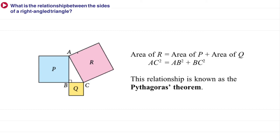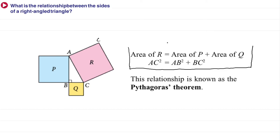The area of square R is attached to AC, so area of R equals AC squared. Similarly, there is a side on top and a side at the bottom, each also forming squares. When you find the areas, you discover the relationship: area of R equals area of P plus area of Q. That is, the area of the square on the hypotenuse equals the sum of the areas of the squares on the other two sides.